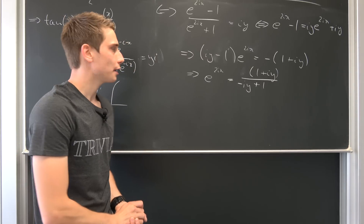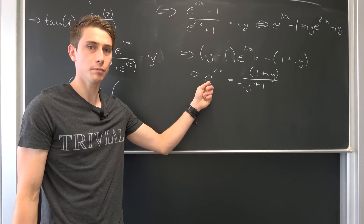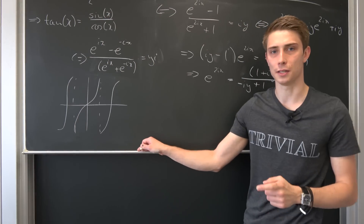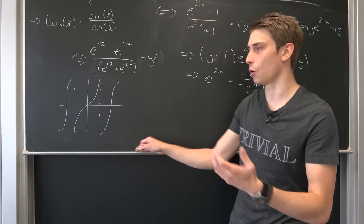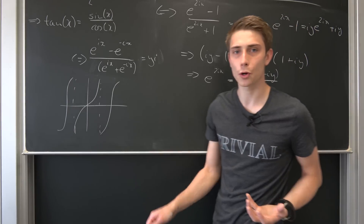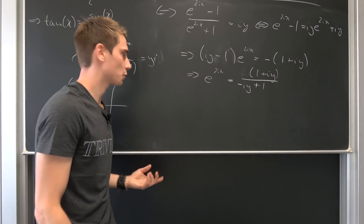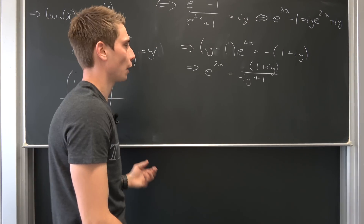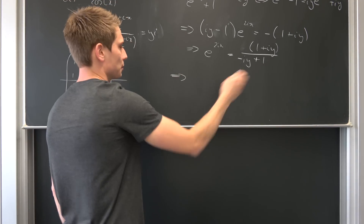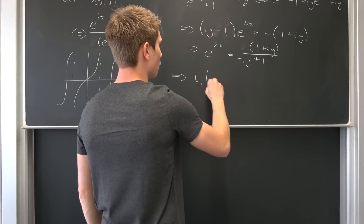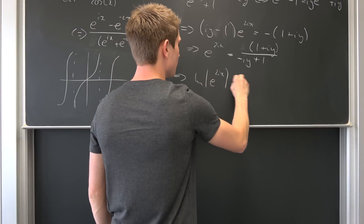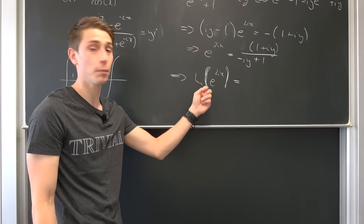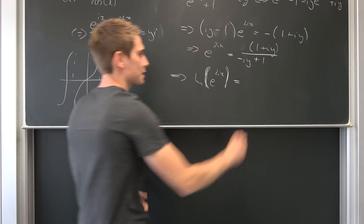Now we can use the logarithm on both sides. We want to consider the principal log here — the principal branch of the complex logarithm. So we take the natural log of e^(2ix), which gives 2ix, equal to the principal log of (1 + i·y) / (1 − i·y). We don't want absolute values — these are real parentheses; it's a complex-valued logarithm.